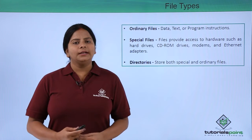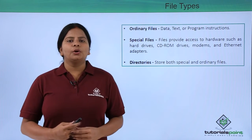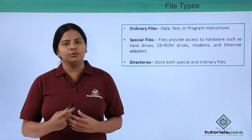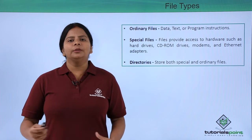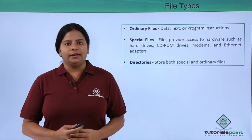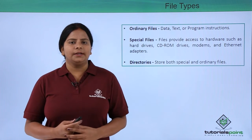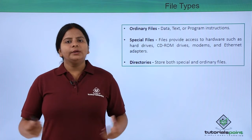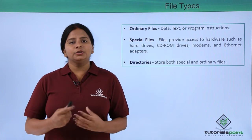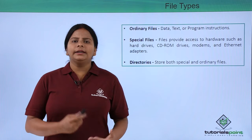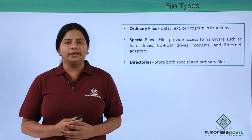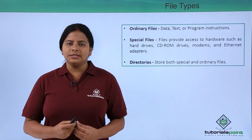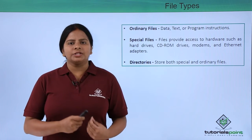Ordinary files are those files like whatever data you store, whatever programs you have, or any particular files you store — everything will be treated as an ordinary file. The next type is called a special file. All the devices we have in the Linux operating system, either directly attached or hot plug-and-play devices, will be treated as a file and get stored into the /dev directory.